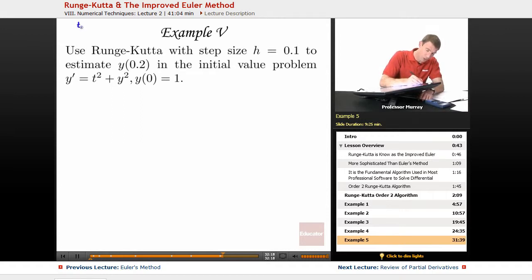Let me remind you of our Runge-Kutta equations. tn plus 1 equals tn plus h, yn plus 1 equals yn plus h times k1 plus k2 over 2, and my k1 equals f of tn plus h. My k2 equals f of, this is where it gets complicated, tn plus h, and yn plus h times k1.